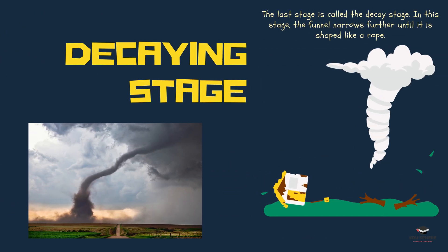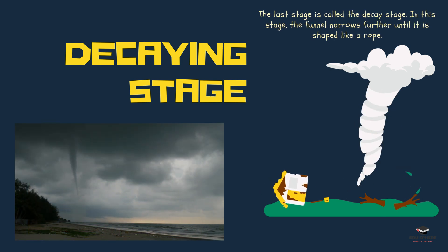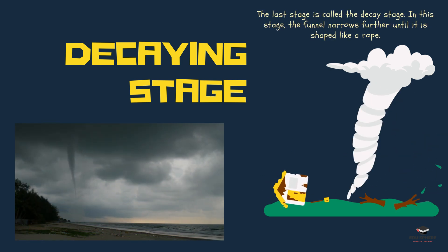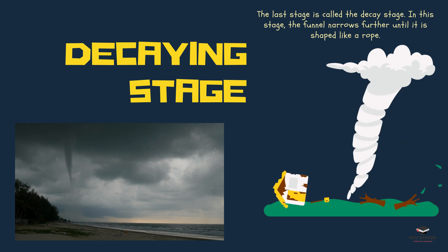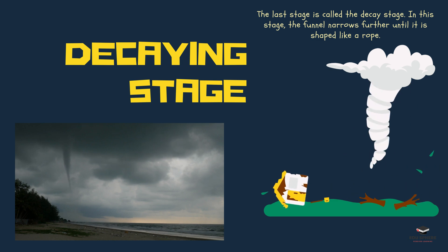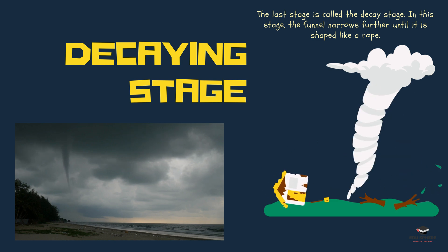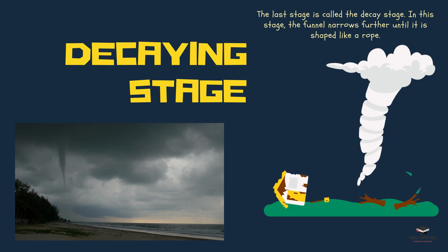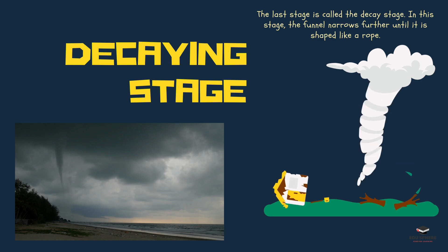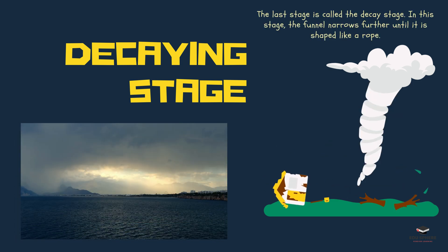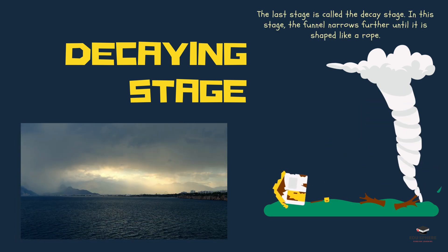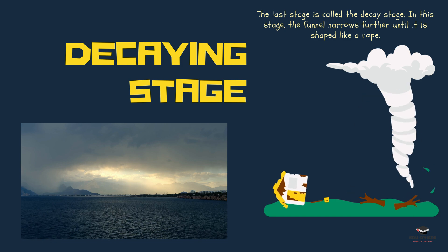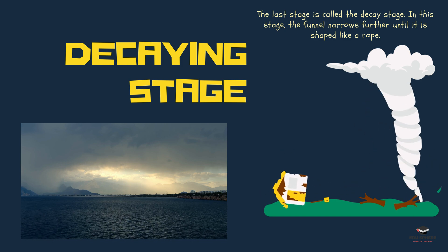When a tornado gets to the end of its life, we call it the decaying stage. Many things can cause a tornado to weaken and disappear: it loses its source of warm moist air, the storm that made it gets weaker, and the weather conditions become less favorable for the tornado. The tornado slows down and then disappears completely.